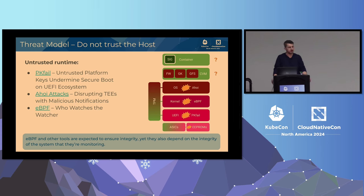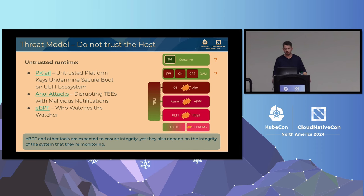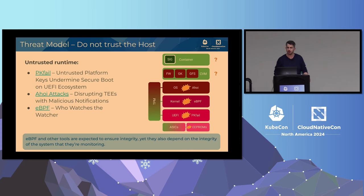The 'Ahoy' attacks, for example, are attacks on CVMs where you can disrupt TEEs with malicious notifications — interrupt overflowing. You can create an attack on CVMs if your host is not protected. There are eBPF tools trying to protect the host, but the problem is they try to ensure the integrity of the runtime on which they themselves depend — a cyclic dependency. You cannot protect the very same runtime you're running in, because if it's broken, you are broken. So eBPF is more of an observability tool than a security tool.